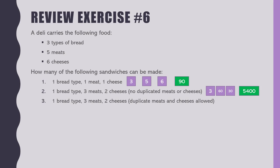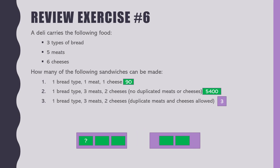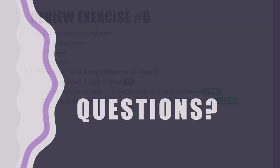The last sandwich variant allows duplicate meats. Three breads. For each meat selection, you can pick from all five again — so 5 × 5 × 5 for meat, and 6 × 6 for cheese. That gives a different total. That's the review portion — it took a bit longer than I hoped, but we're okay. Let's talk about permutations.